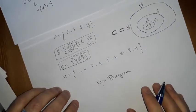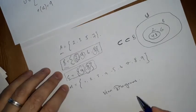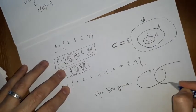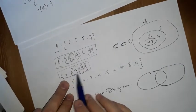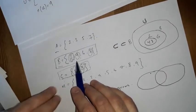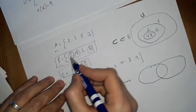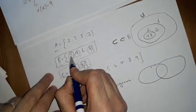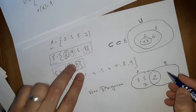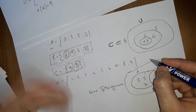Now let's talk about intersection. The intersection of A and B, written A ∩ B, contains only the numbers that exist in both sets. Looking at A = {2, 3, 5, 7} and B = {2, 4, 6, 8}, only the number 2 appears in both. In the Venn diagram, A contains {3, 5, 7} on one side, B contains {4, 6, 8} on the other, and 2 is in the overlapping middle region.